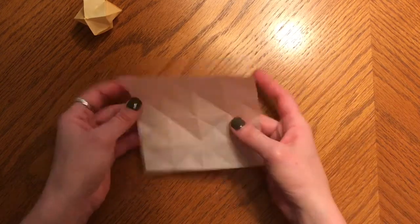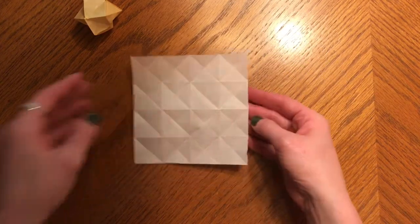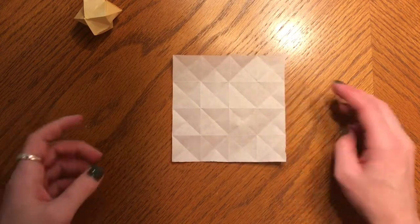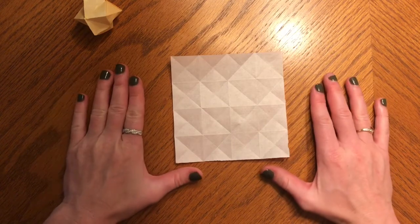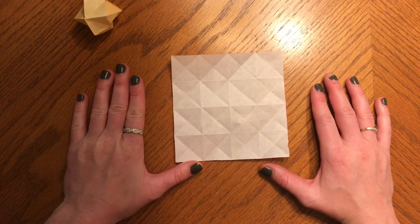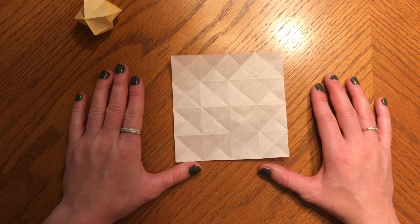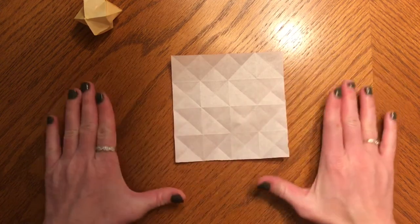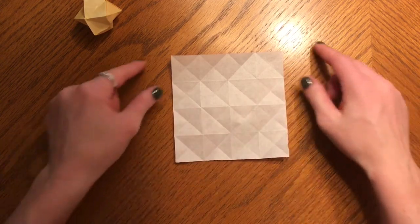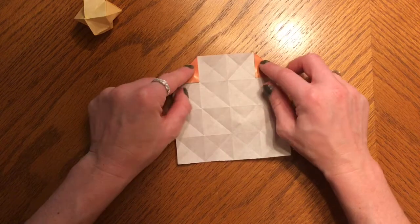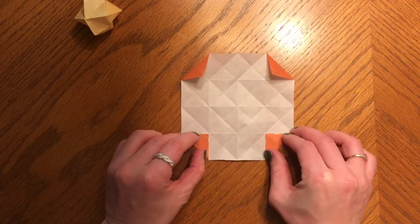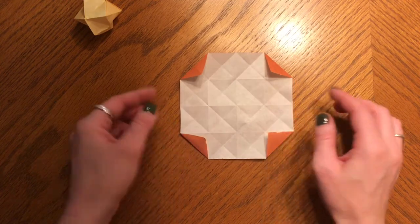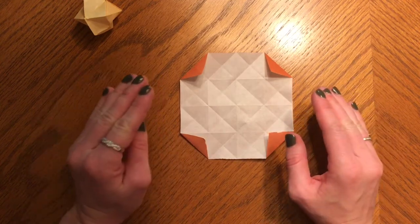Since all of those folds were the same I did speed through that a little bit. If you need to pause absolutely do so. But once you are at this point and your paper looks like mine you're ready for your next step. So we have all the folds we need now we're just gonna repurpose some of them. So we're gonna fold our corners in here and over here.